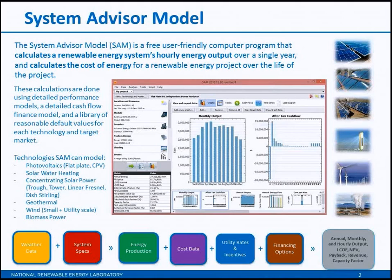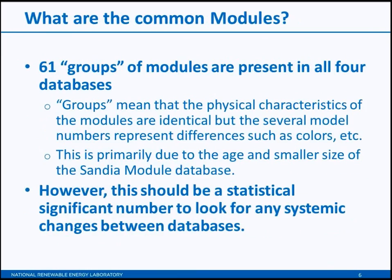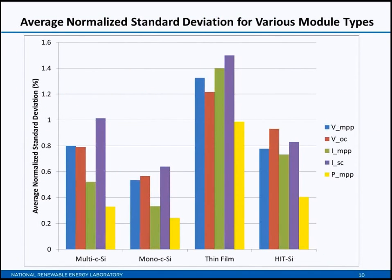If you're not familiar with the SAM model, it takes a variety of inputs, calculates the performance of a typical solar system — we actually represent a multitude of technologies — and combines that performance estimate with financing, utility rates, incentives, et cetera, to come out with a variety of high-level economic metrics such as the levelized cost of energy, the net present value, payback, as well as detailed hourly and even sub-hourly performance outputs and detailed annual cash flow. As you can see on this graphic, one of the things that goes into this process is system specifications, and that's the area of the SAM workflow we're going to be talking about today.